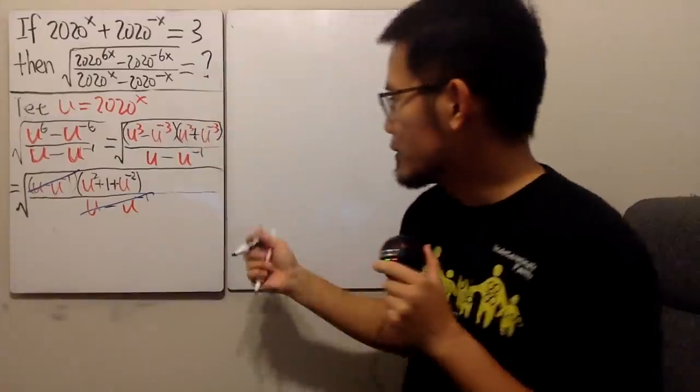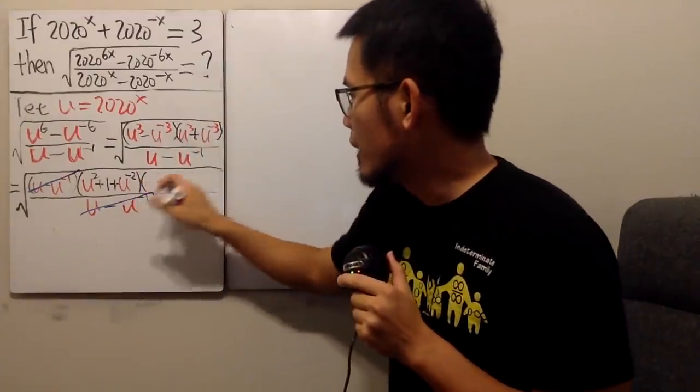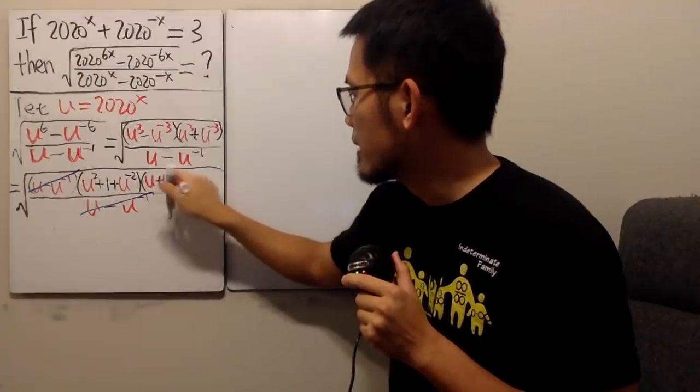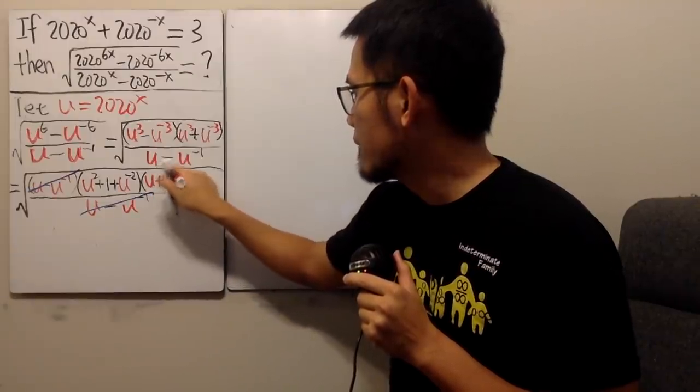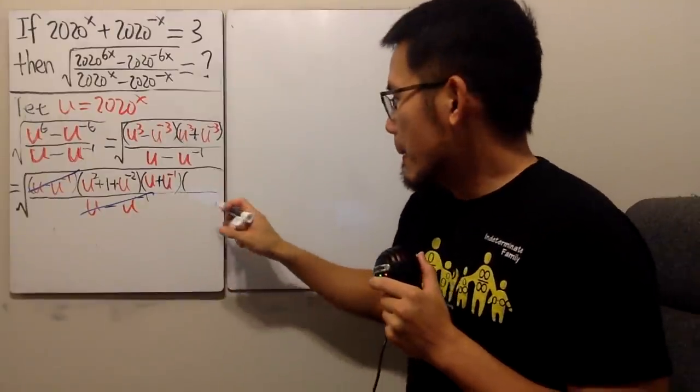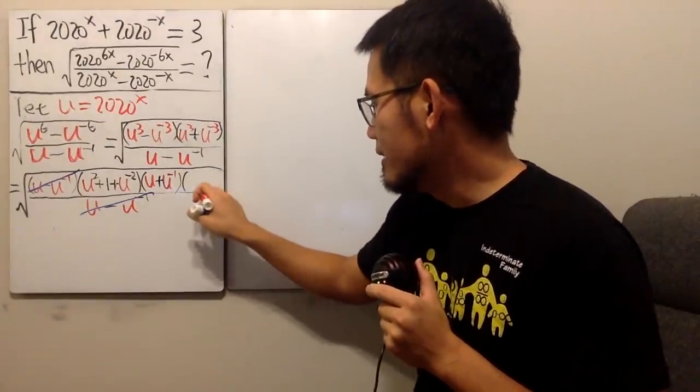All right, so now I just have to factor this right here, which will end up with u plus u to the negative one. And that's what we have. And then right here, see again, I failed it again. So I will try this, I will just indicate it with an arrow.